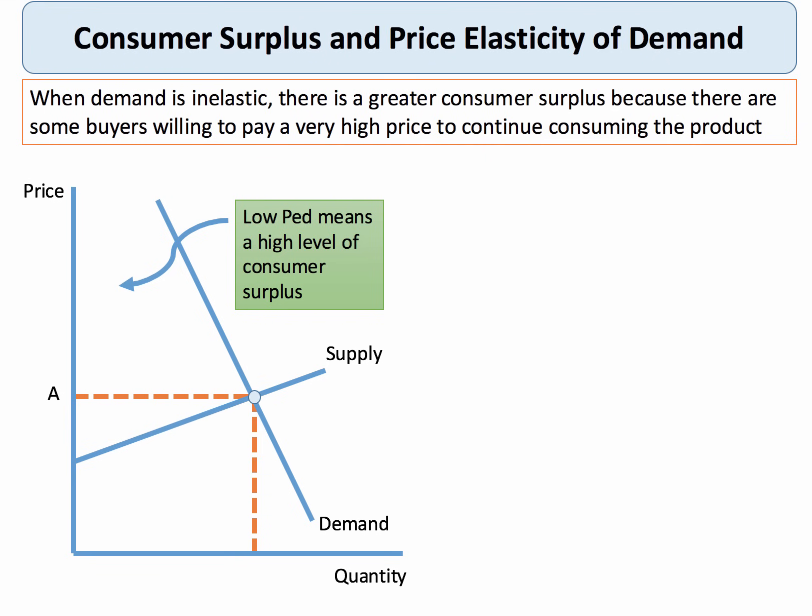Now, consumer surplus is crucially determined in part by the elasticity of the demand curve. When demand is inelastic there is a fairly high level of consumer surplus. This is because consumers are fairly insensitive to the price, and if the price were to rise significantly above A, some consumers would still be willing and able to pay it. So low price elasticity tends to mean a high level of consumer surplus.